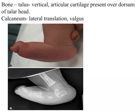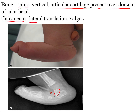Talking about the bony changes: the talus shows a vertical orientation. The articular cartilage, which is normally present on the talar head, is seen on the dorsum of the talus bone. For the calcaneum, we see a lateral translation or valgus deformity.